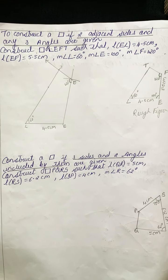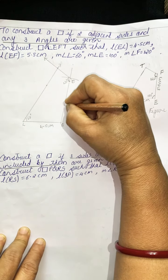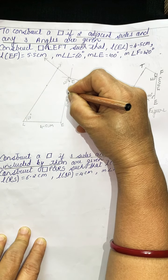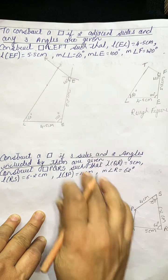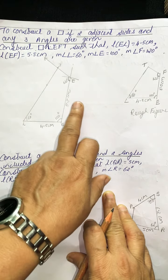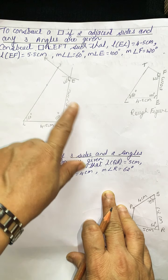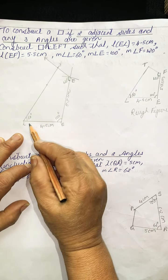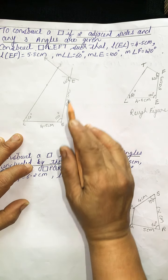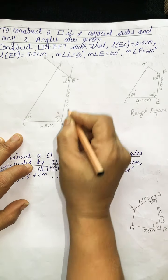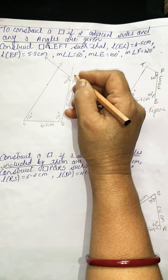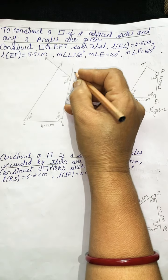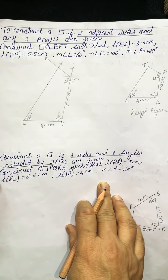This is the required quadrilateral. This is 5.5 centimetres. This is 100 degrees. You can draw it like this also. But you have to accordingly label it. Angle L wherever L is, you take 60. E will be 100, F will be 120. Accordingly you can draw the diagram. Use arcs.